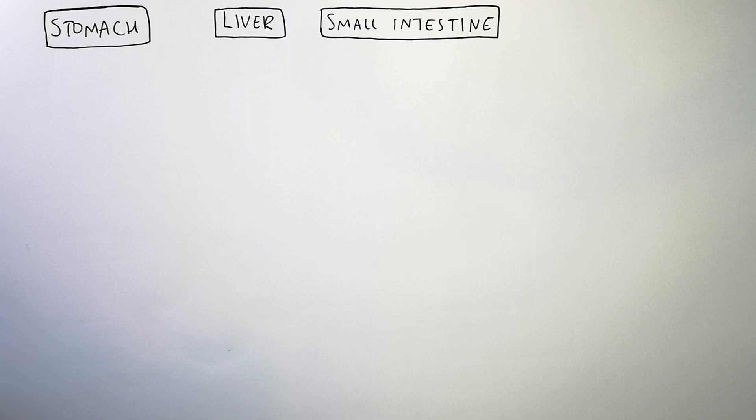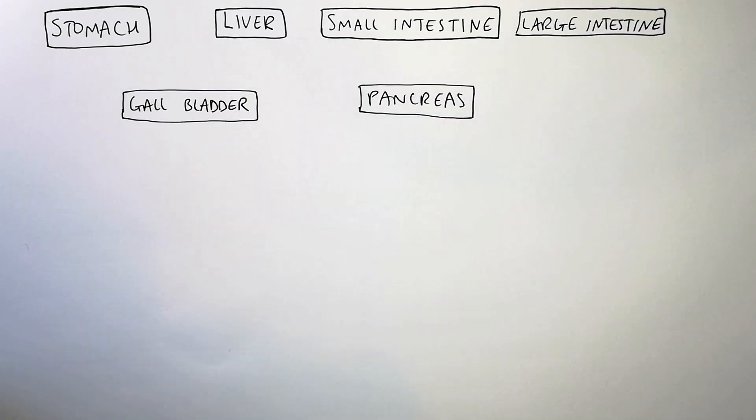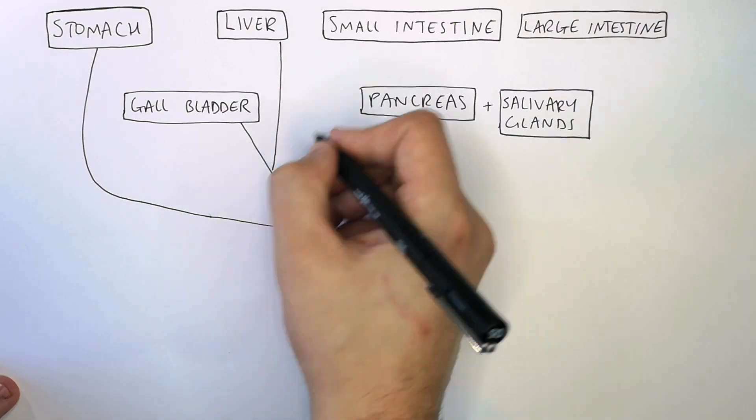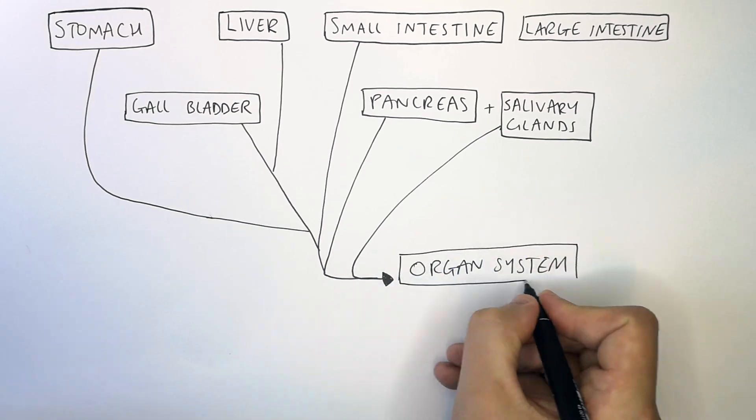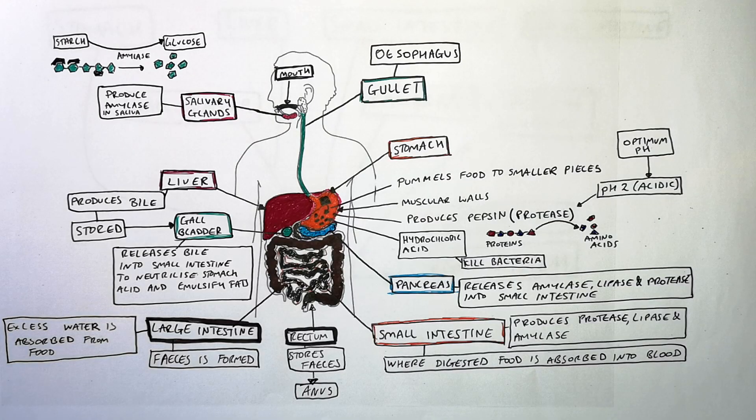The organs of the digestive system include the stomach, the liver, the small intestine, the large intestine, the gallbladder, the pancreas and the salivary glands. These are all examples of organs that form a larger system, in this case the digestive system.